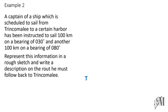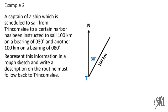Mark T for Trincomalee, draw the north direction, then mark 30° and 100 km to get point P. At P, draw north again, mark 80° and 100 km to get the final destination, marked as C. This gives us our rough sketch.